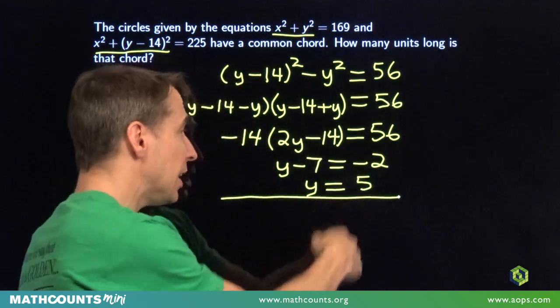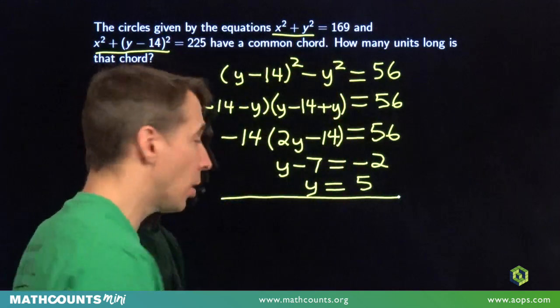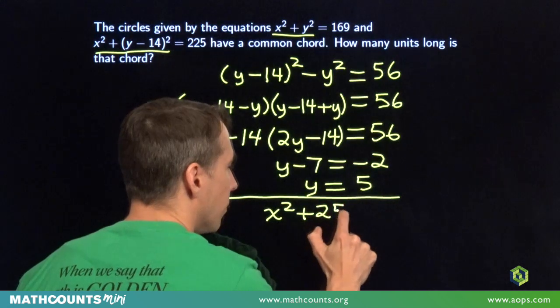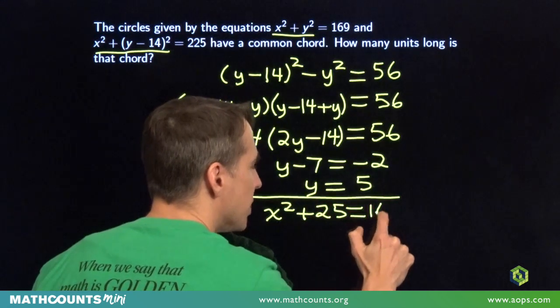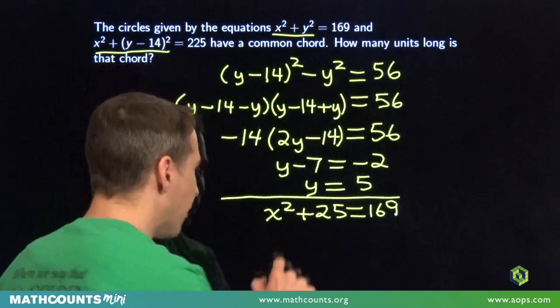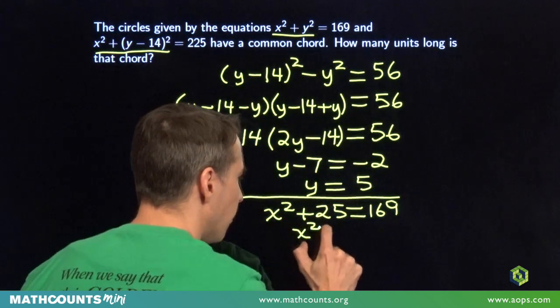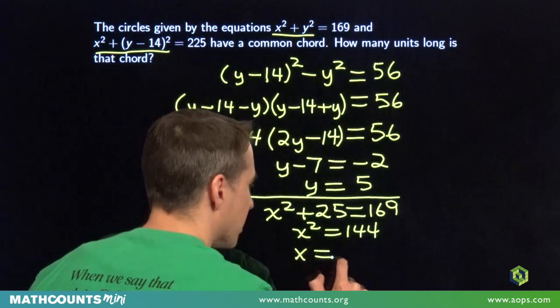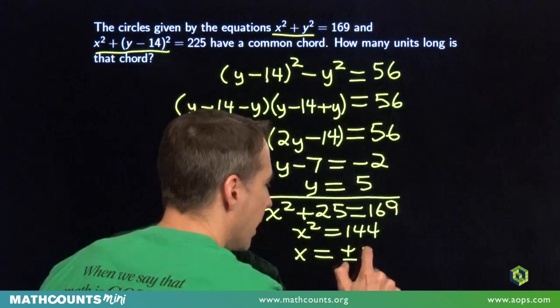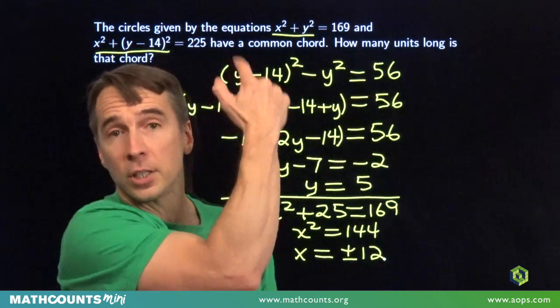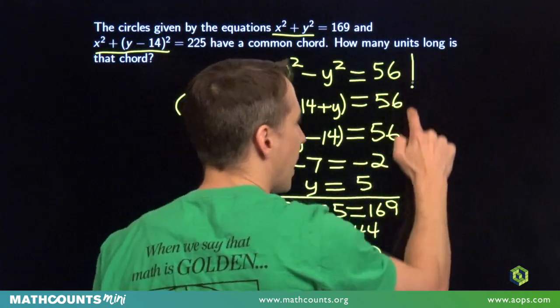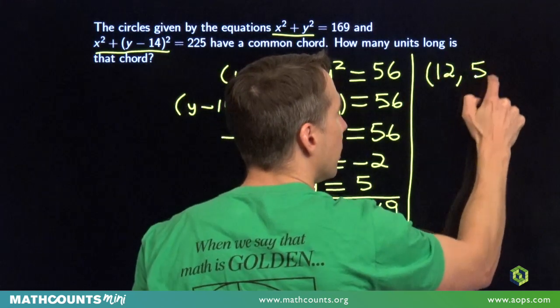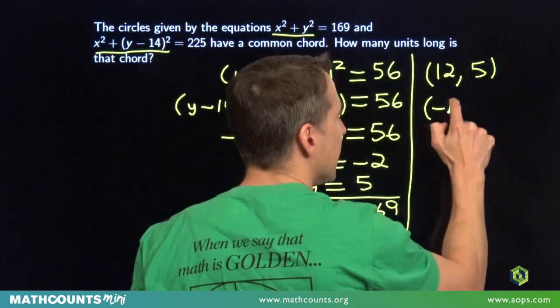And we can figure out x by taking that 5, put it back into this equation for y. We have x squared plus 25 equals 169. Then we subtract 25 from both sides. We have x squared is 144. So x has to be 12 or negative 12. And we found the two points where these circles intersect. Those points are 12, 5, and negative 12, 5.